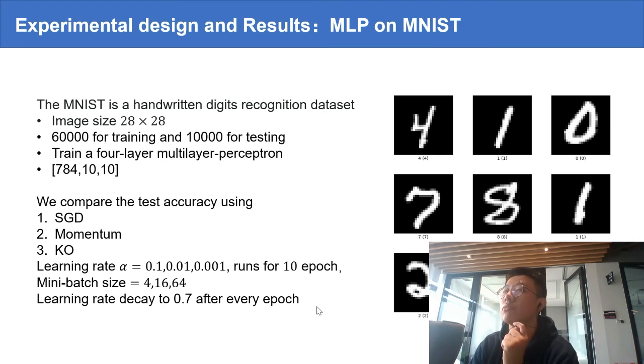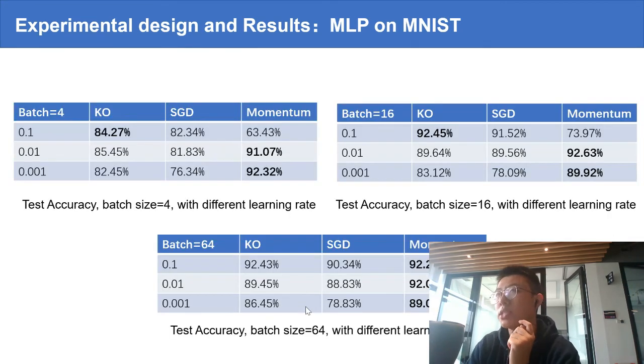We also train a multi-layer perceptron on MNIST using three methods and different learning rates and batch sizes. We can see two phenomena. First, the Kalman Optimizer always outperforms vanilla SGD, and we can see that it's a more advanced version of SGD.